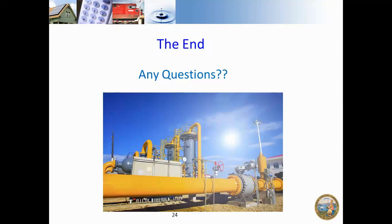The design formula for steel pipe is in 192.105, and for plastic pipe it's 192.121. If you don't have prior pressure records, you can utilize that design formula under 192.619 to determine what your maximum operating pressure is — so you can figure out if you are going above and beyond that limit.